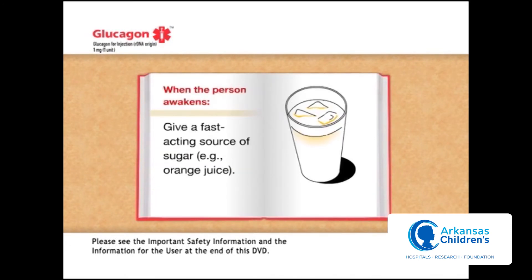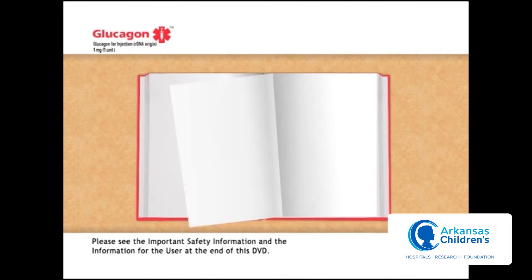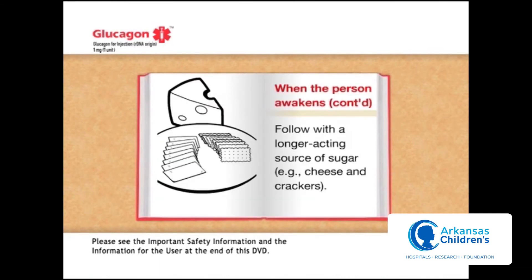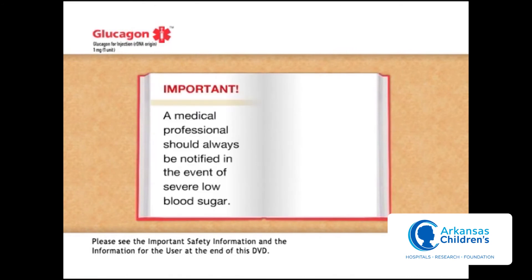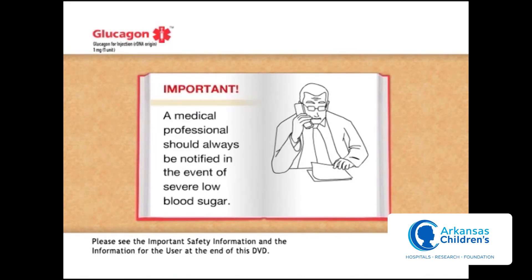When the person awakens and is capable of swallowing, give them a fast-acting source of sugar — for example, a regular soft drink or juice. Make sure to follow that with a longer-acting source of sugar, such as cheese and crackers. Notify the person's doctor, as your health care provider should always be told whenever an episode of severe low blood sugar occurs.